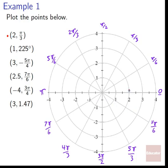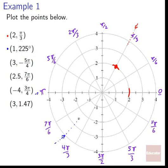First point: 2 comma pi over 3. We're on the concentric circle representing distance 2, and we go out to angle pi over 3 — that's our point. Next, in blue: 1 comma 225 degrees. Degrees are sometimes used in polar, but are pretty rare. 180 degrees gets us to pi, and another 45 degrees gets us to 225 degrees — that splits the arc sector in half between the pi and 7 pi over 6 lines. At a distance of 1, we mark that point.